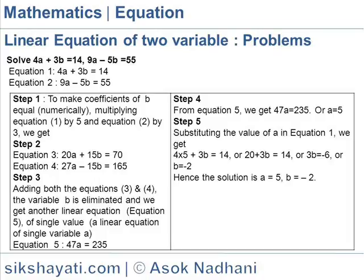So 3b equals 14 minus 20, which is minus 6, giving b equals minus 2. Hence the solution is a equals 5 and b equals minus 2.